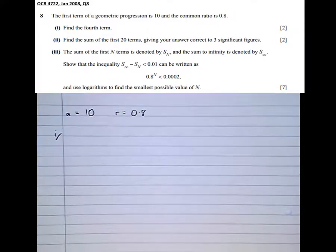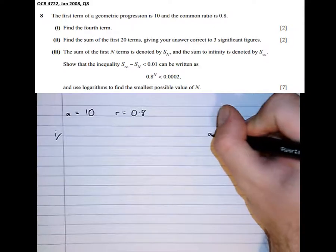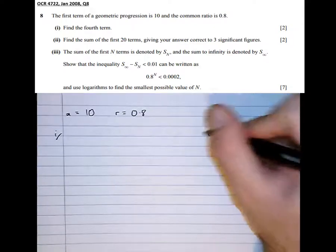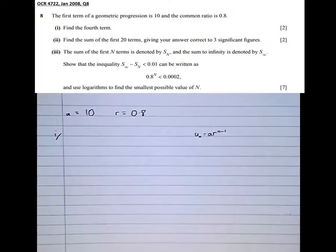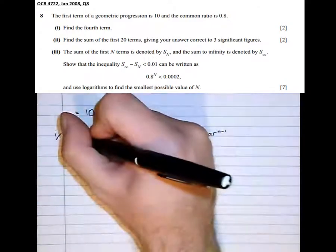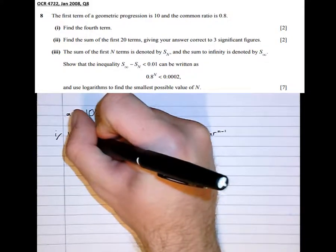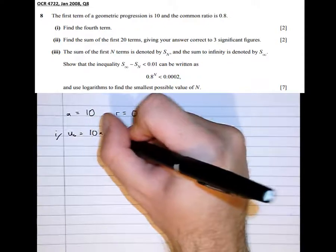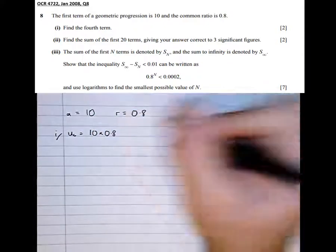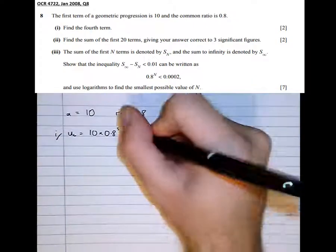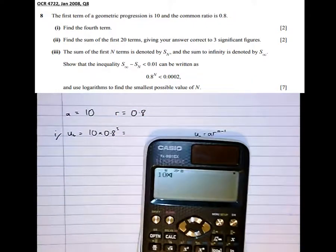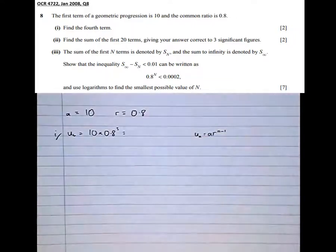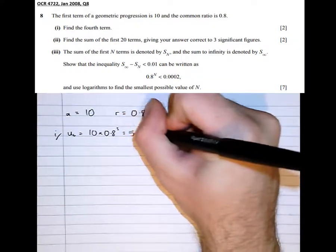Part 1 says find the fourth term. Consulting the formula sheet, we see that the nth term is A times R to the n minus 1. So in this case n equals 4, so the fourth term U4 is A times R to the power of 4 minus 1, which is 3. Putting it in the calculator: 10 times 0.8 cubed equals 5.12, which is the fourth term.